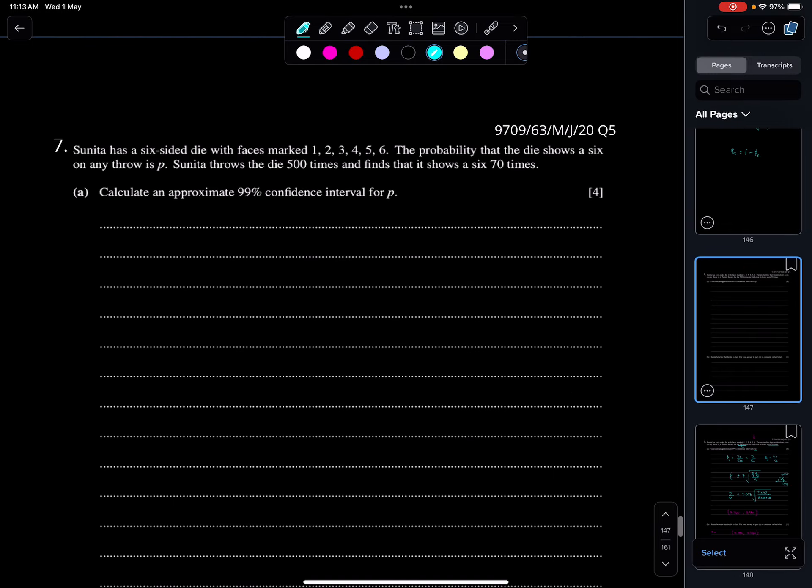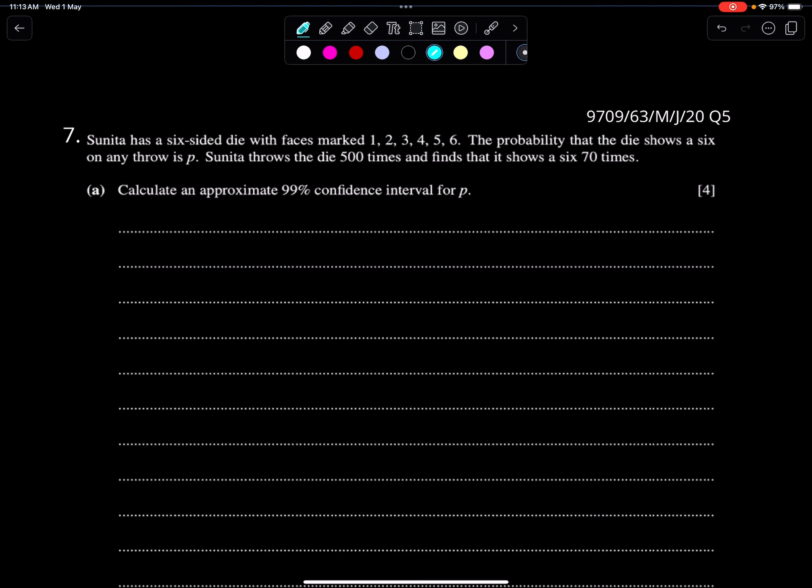The example question. This question is from June 2020 Paper 6 Question 5. Sunita has a 6-sided die with faces 1, 2, 3, 4, 5, 6. The probability that the die shows a 6 on any throw is P. Sunita throws the die 500 times and finds that it shows a 6 70 times. So PS is X upon NS. So X is 70, requirement total is 500. So it's 7 upon 50 and QS would be 43 upon 50.